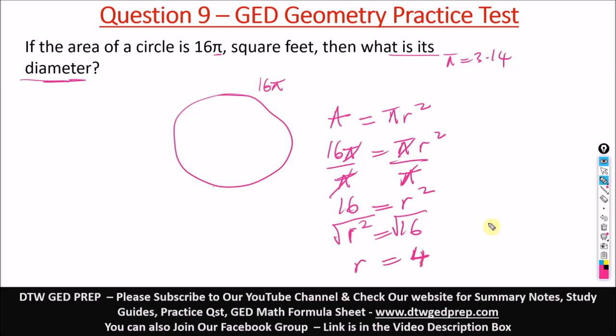So the diameter will be 2 times what? d is 2 times r, 2 times radius, that will be 2 times 4, which is what? 8. So the diameter is 8 feet, that will be the diameter of this circle, 8 feet. So this is our answer.